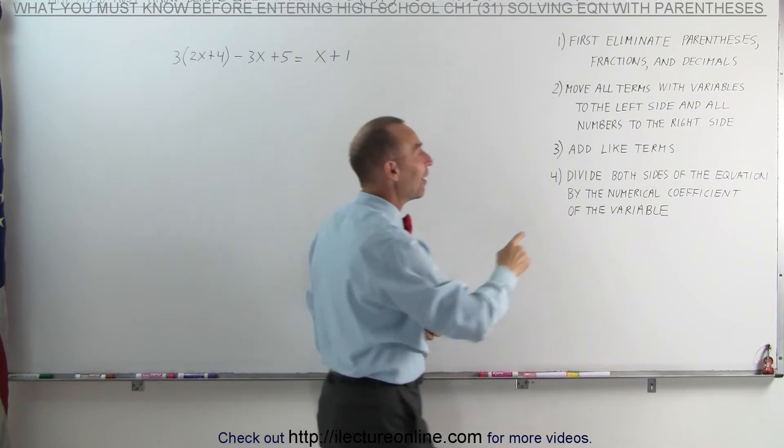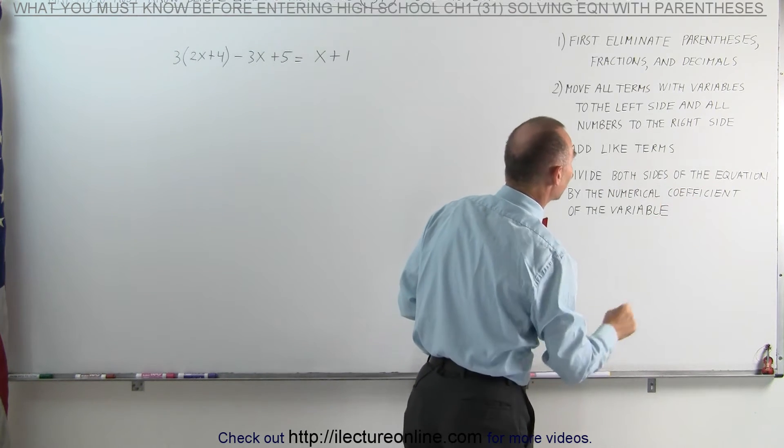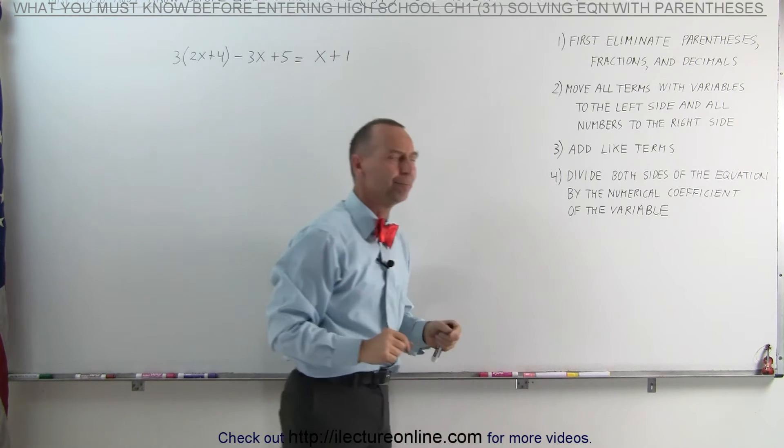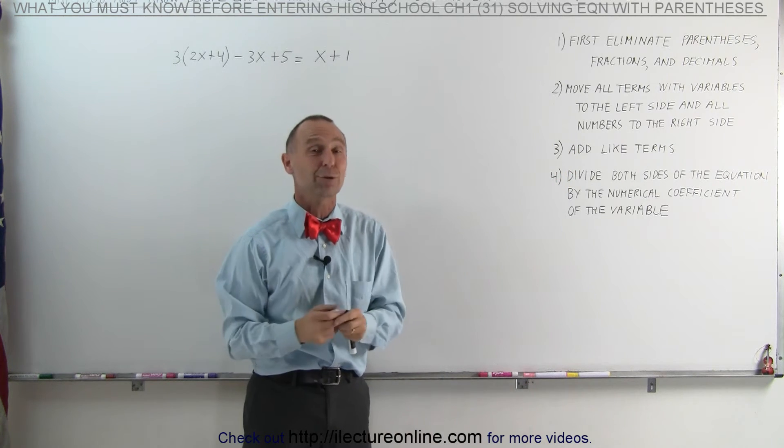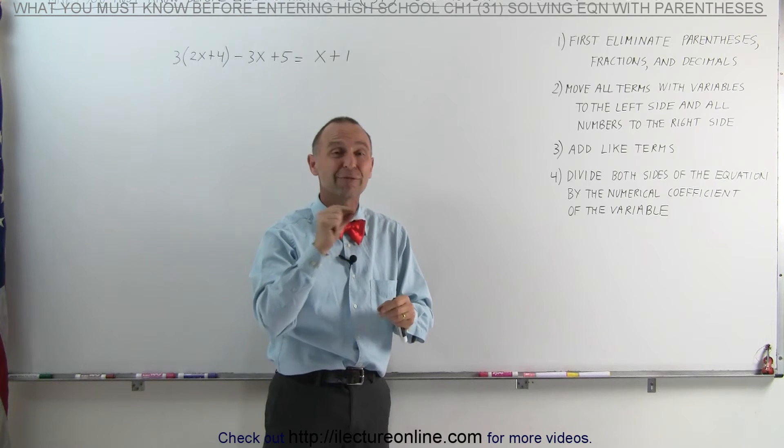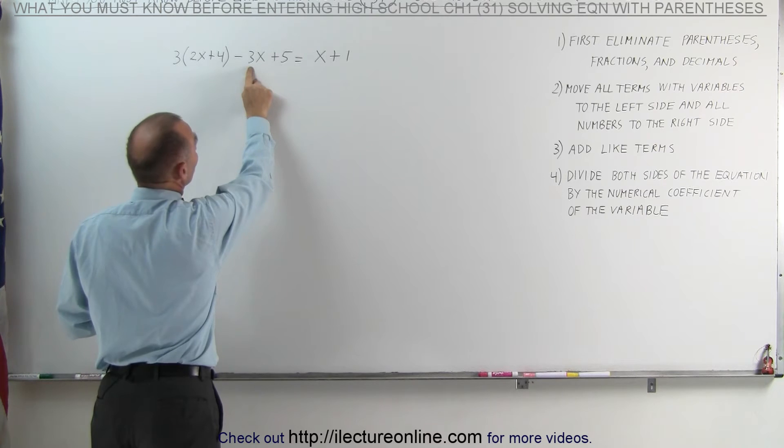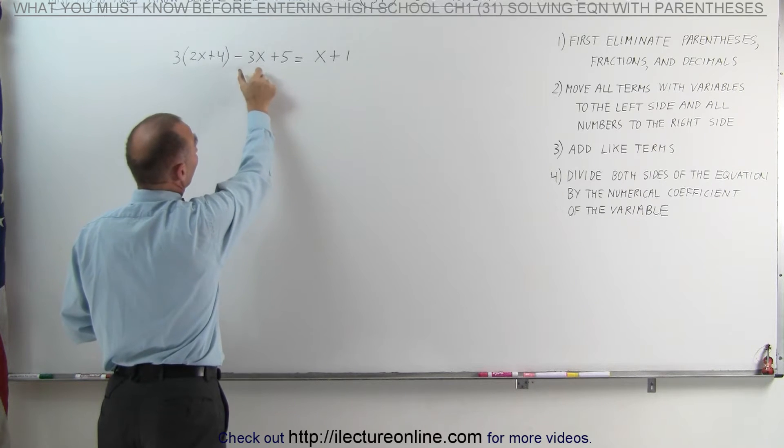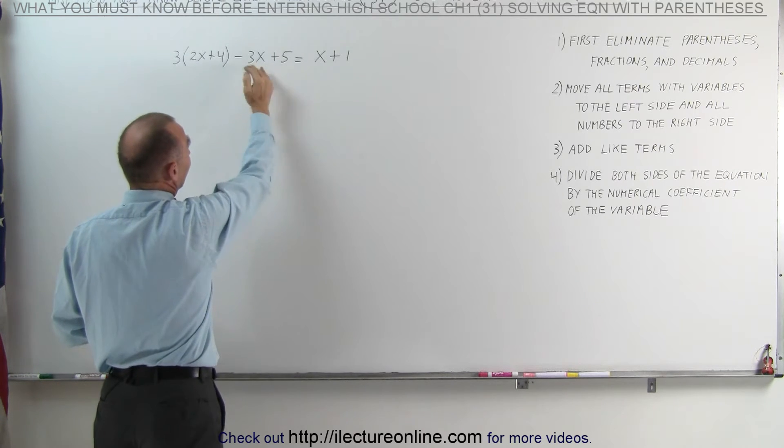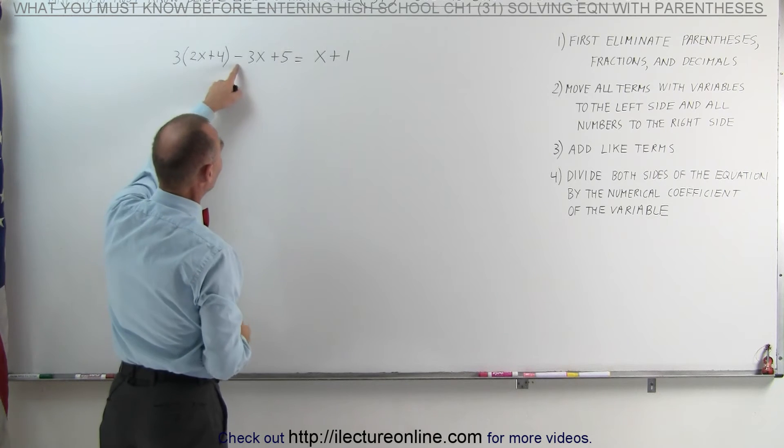And finally, we then divide both sides of the equation by the numerical coefficient of the variable. What do we mean by the numerical coefficient? It's simply the number in front of the variable that we're multiplying the variable by. For example, in this term, 3 would be the numerical coefficient. So in that case, we divide both sides by the number 3, or in this case, negative 3.